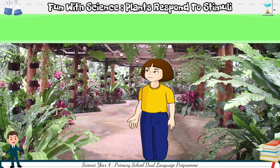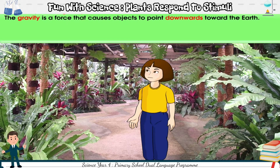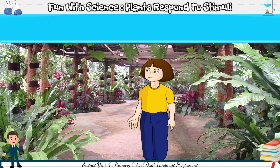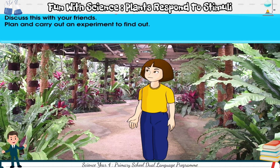Plants respond to gravity. Gravity is a force that causes objects to point downwards toward the earth. Which part of a plant responds to gravity? Discuss this with your friends. Plan and carry out an experiment to find out. Click on Anna to see her experiment.